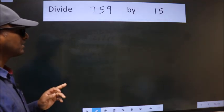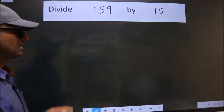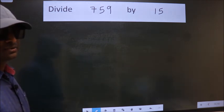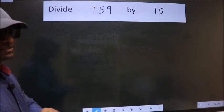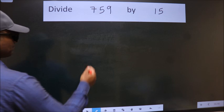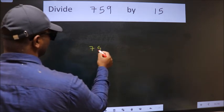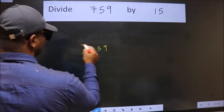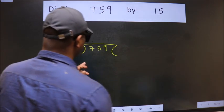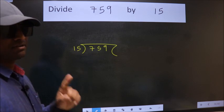Divide 759 by 15. While doing this division, many do this mistake. What is the mistake that they do? I will let you know. But before that, we should frame it in this way. 759 here, 15 here. This is your step 1.